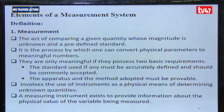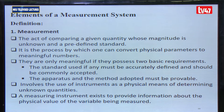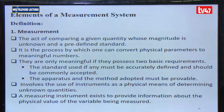The second requirement is that the apparatus and method adopted must be provable. This means when you are doing your measurement, you must follow a procedure whereby somebody else can follow the same procedure and obtain the same measurements. Measurement also involves the use of instruments as a physical means of determining unknown quantities.